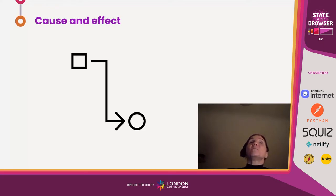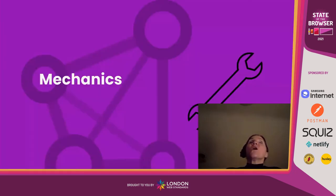The answer comes in four things: mechanics, semantics, interaction, and then construction. So, onwards — what does this actually mean?